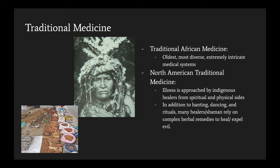Plant medicine has been around for thousands of years. Traditional medicine — and all medicine, actually — originates from Africa. Traditional African medicine is the oldest, most diverse, and an extremely intricate medicinal system. This makes sense because humans first evolved in Africa, but it also means there is no exact time at which we know this traditional medicine system developed. Another very old medicine system is North American, where illness is approached by indigenous healers from both spiritual and physical sides, relying on dancing rituals and complex herbal remedies to heal and expel evil believed to cause physical ailments.